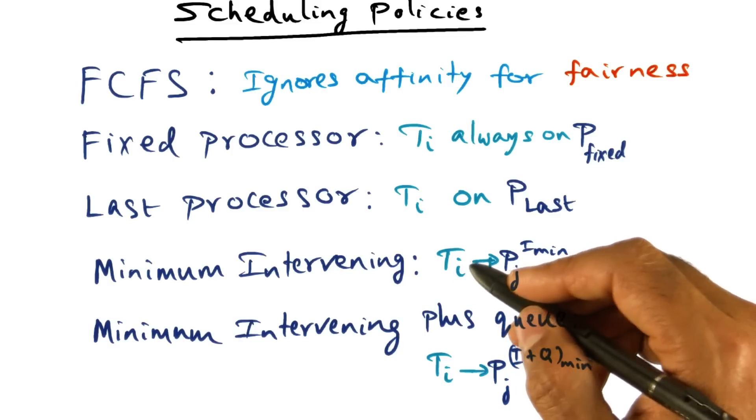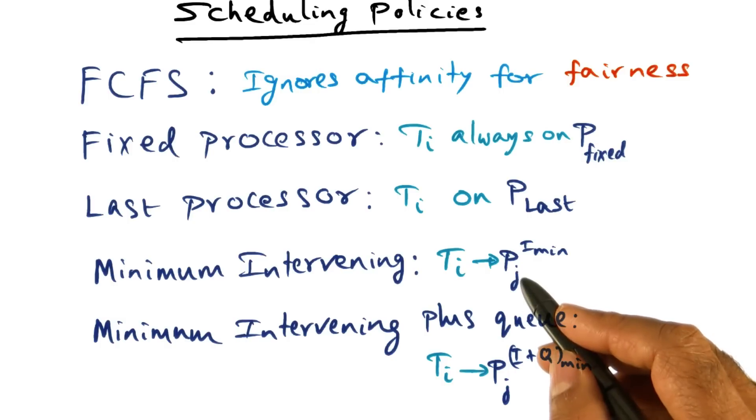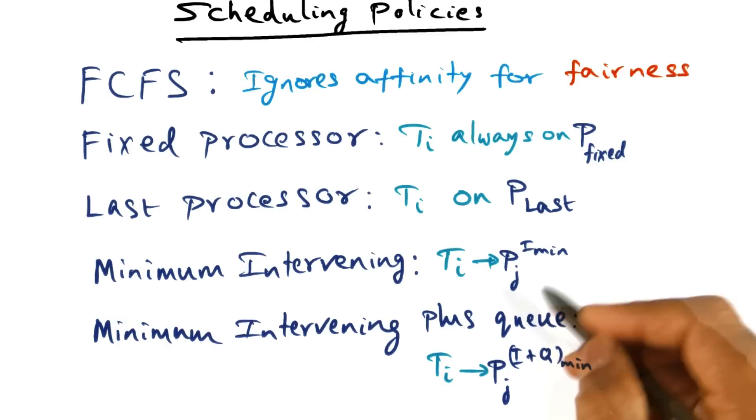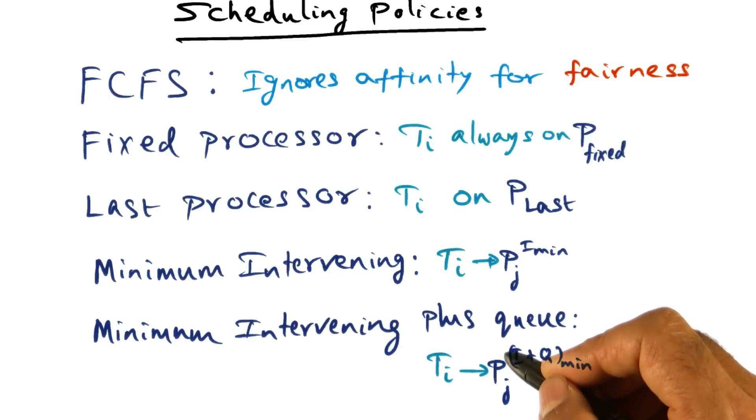But when I make a scheduling decision that ti is going to run on a particular processor, it may be that this particular processor, pj, may already have some other threads that are going to run on it. And that's the idea behind minimum intervening plus q. I want to explain this in a little bit more detail.